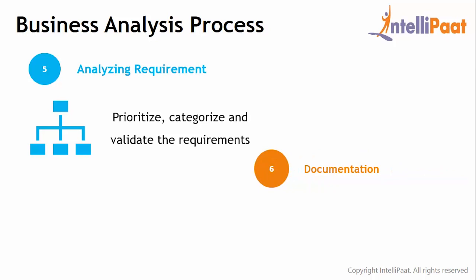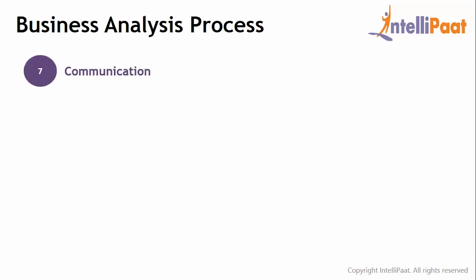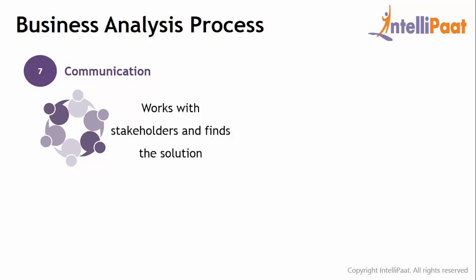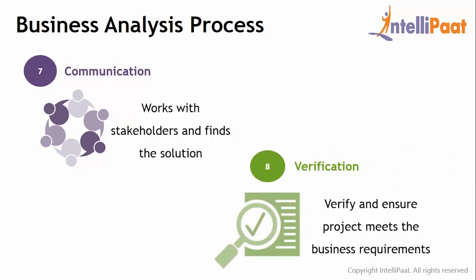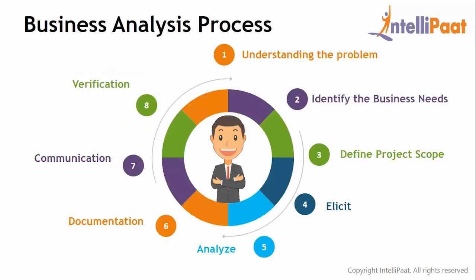Step 6 is requirement documentation — the business analyst documents all information and produces reports like process flows, UML diagrams, and other documentation. Step 7 is requirements communication, an important skill wherein the BA works to bring different stakeholders to a common understanding of the requirements and gain their buy-in on the final solution. Step 8 is verifying that the implemented solution meets the requirements — after the requirements handoff to the technical team, the BA ensures that the technical design meets the business requirements and usability standards.